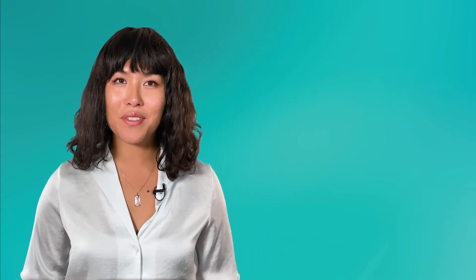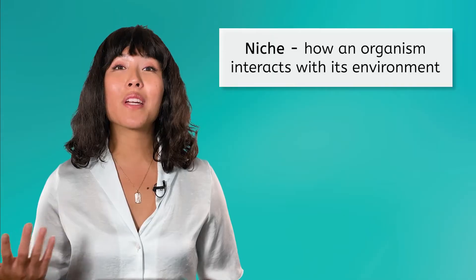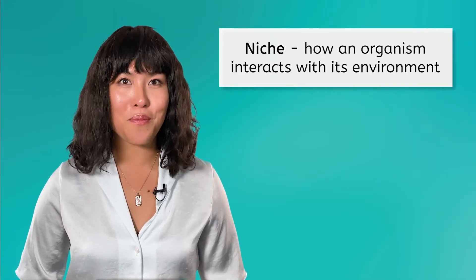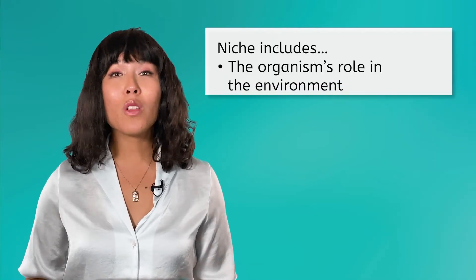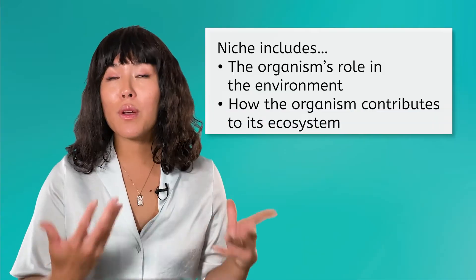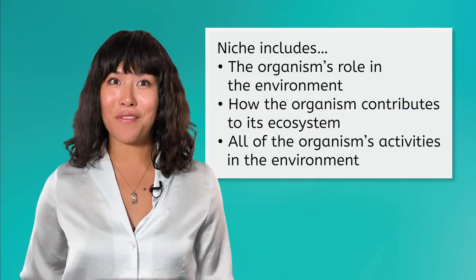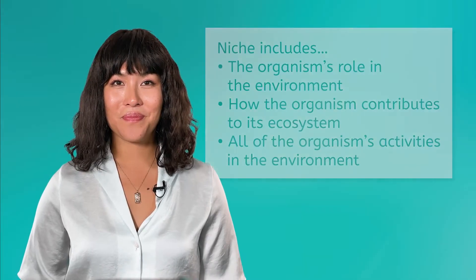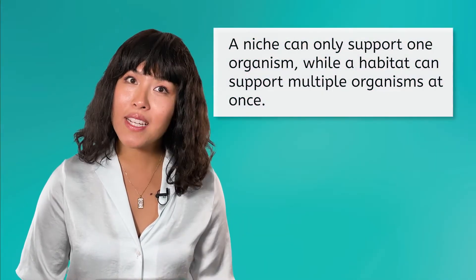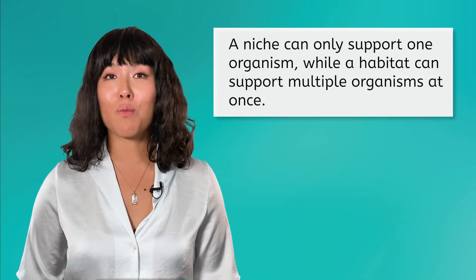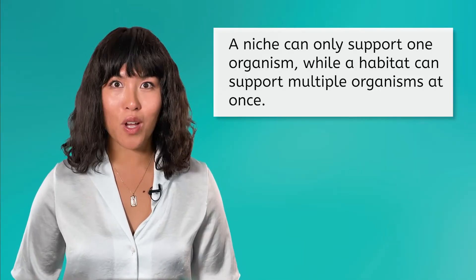If an organism's habitat is the physical location where it lives, its niche is how the organism interacts with its environment. This includes its role in the environment, how it contributes to its ecosystem, and all of its activities in the environment. The niche of the red fox is very specific. In fact, by definition, a niche can only support one organism, compared to a habitat that can support multiple organisms at once.